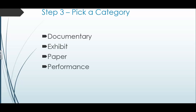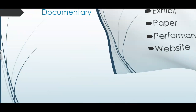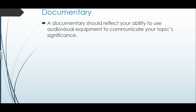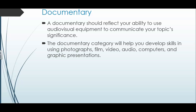Step three: pick a category. Your category is one of these five: a documentary, exhibit, paper, performance, or website. If you're going to do a documentary, it needs to reflect your ability to use audio-visual equipment to communicate your topic's significance. You'll be developing skills using photographs, videos, audio, and graphic presentations to create a documentary.